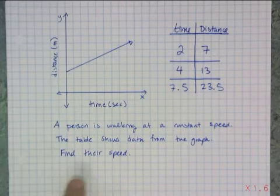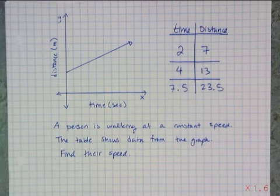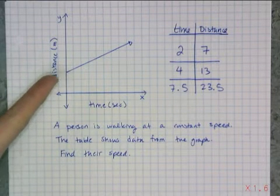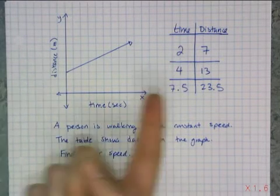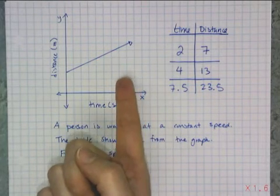And we're going to use the concept of speed. So this is the graph of someone who's walking at a constant speed, and this table represents data points from this graph.